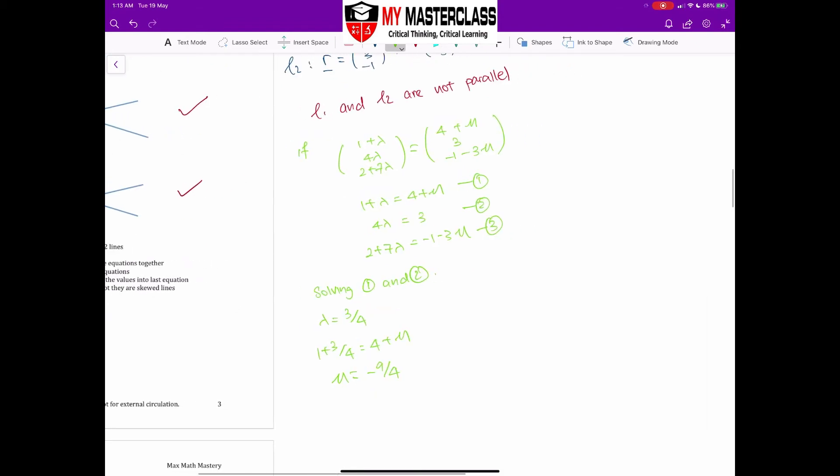So with this lambda and mu, now assuming the lines intersect, this lambda value and this mu value will fit into my third z component very nicely. However, if these two values don't fit into my third equation, it simply means that the lines are skewed.